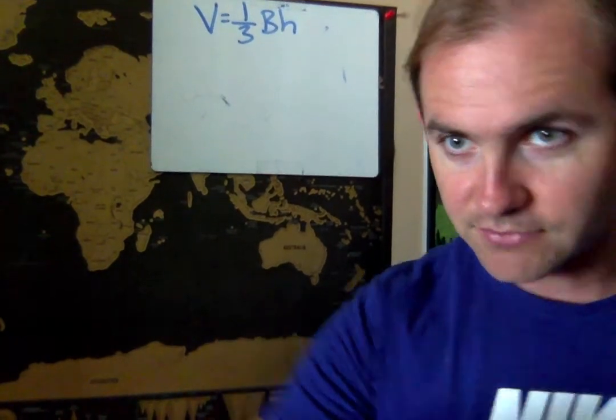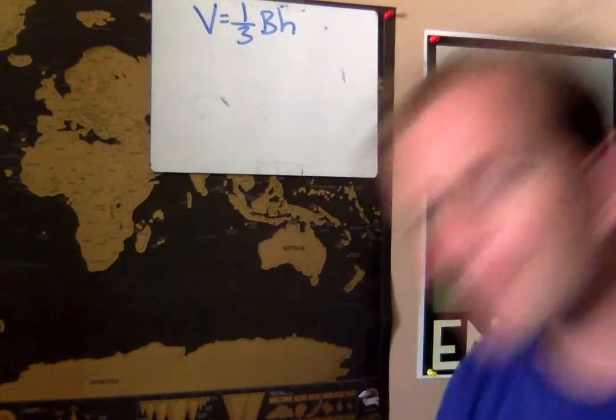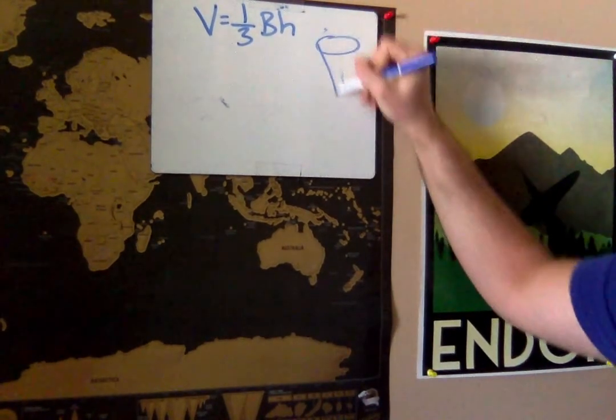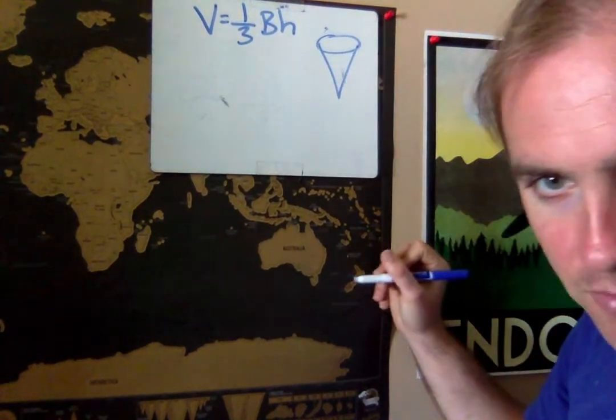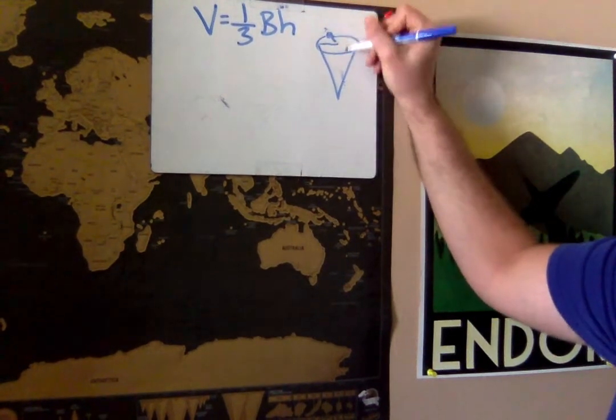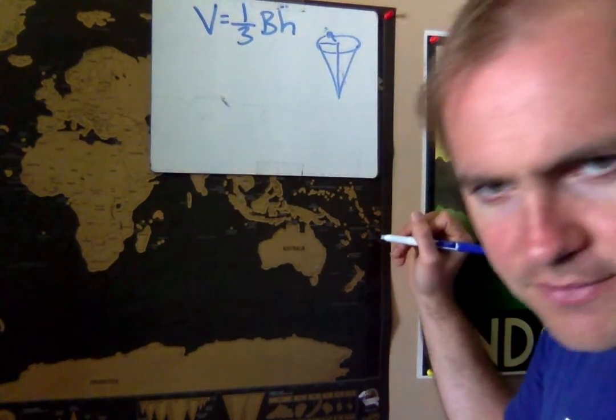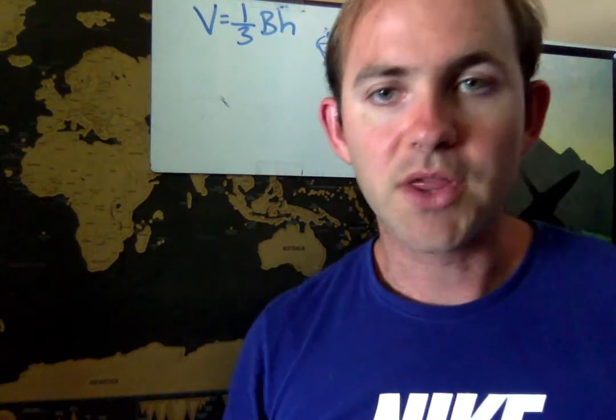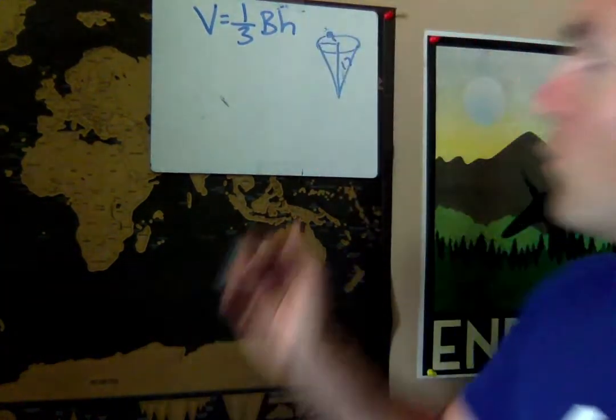I'm going to drop my little eraser rag here. So that one is kind of like an upside down cone. Looks kind of like this. They gave us a radius of nine and they gave us a height of 17. And they want us to use the formula one third area of the base times height. Well, let's write that out.